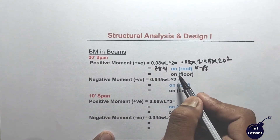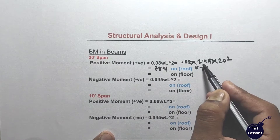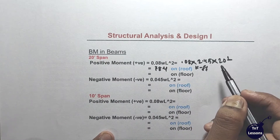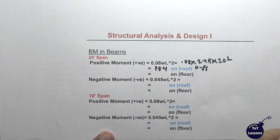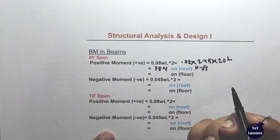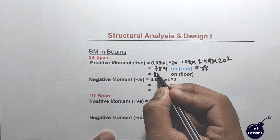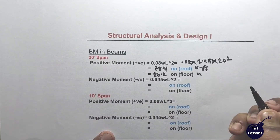On the roof, at the same time by doing the same thing, because the roof load is 2.45 and the rest of the floor is 2.6. So when you use 2.6, you get 83.2 feet-kip.